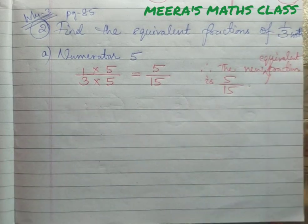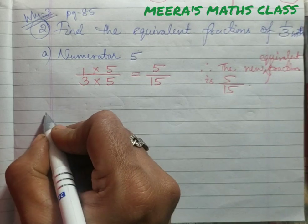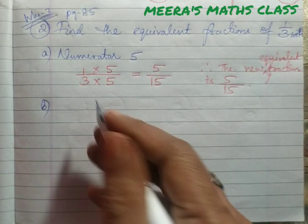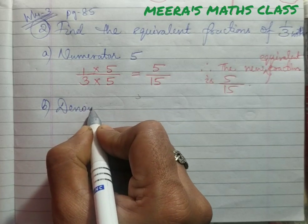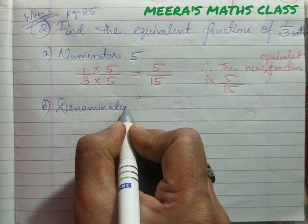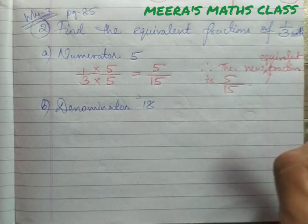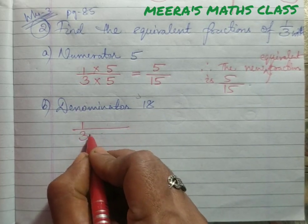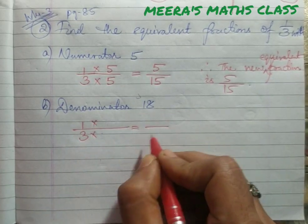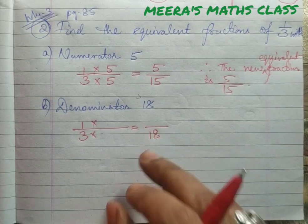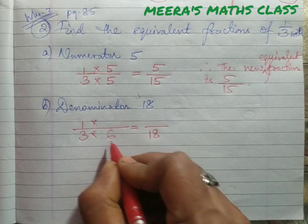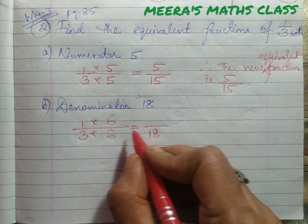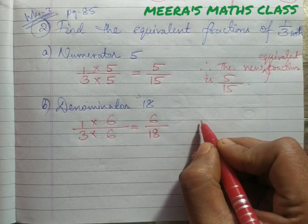Now let's do one more example. The question is: denominator 18. Same base fraction 1 by 3 — you have to multiply by how much to get 18 as the denominator? 3 times 6 equals 18. So the top also you multiply by the same: 1 times 6 equals 6.